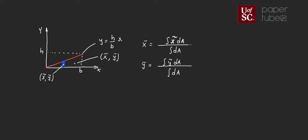In this case, we can say that my x̃ is equal to x — just the value of x. This dA is a rectangle, and the area of a rectangle is height times width. The height is equal to y, and the width, since this is a differential of area, is equal to dx. So the base of that rectangle is very, very small — it's a dx.